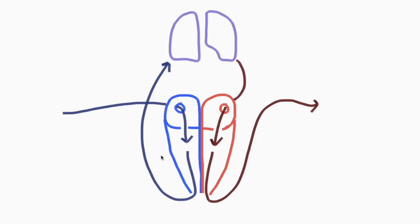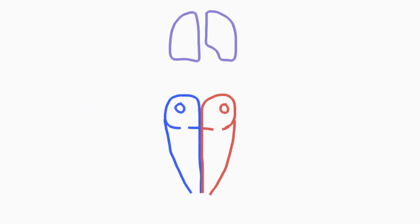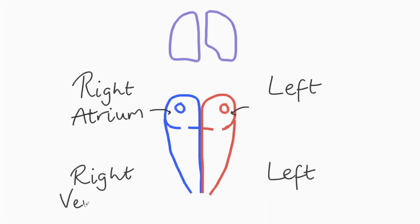There are these four stations in the heart which orchestrate the process. We call them the right and left atrium and the right and left ventricle.